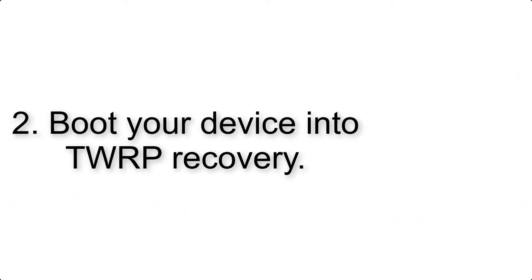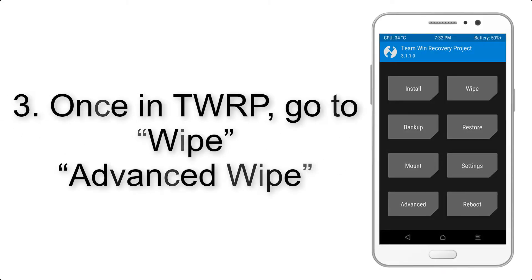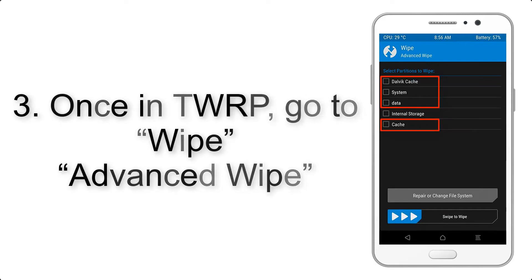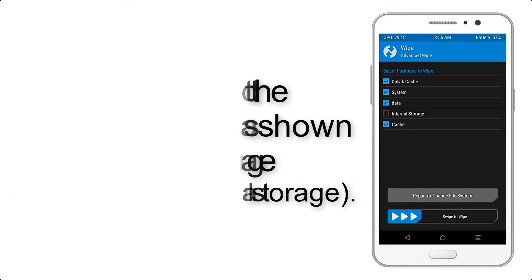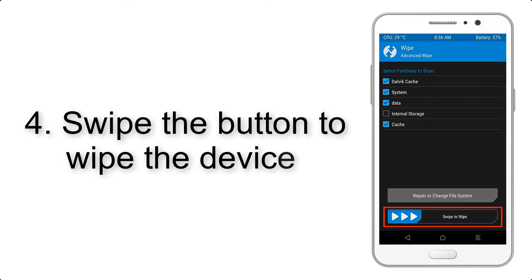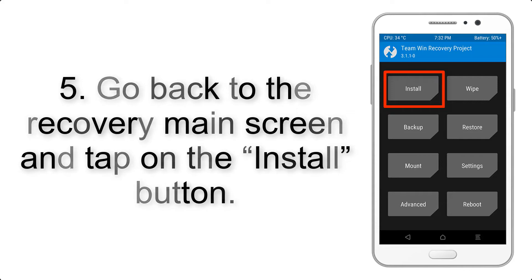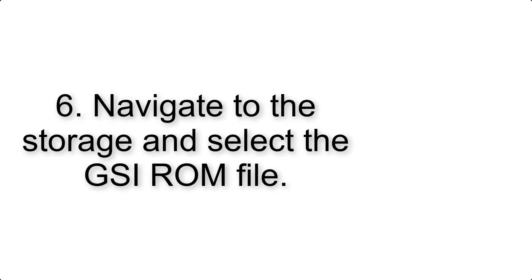Step 2: Boot your device into TWRP recovery. Once in TWRP, click on Wipe, then Advanced Wipe, and select the checkboxes as shown in the image, excluding internal storage. Step 4: Swipe the button to wipe the device.